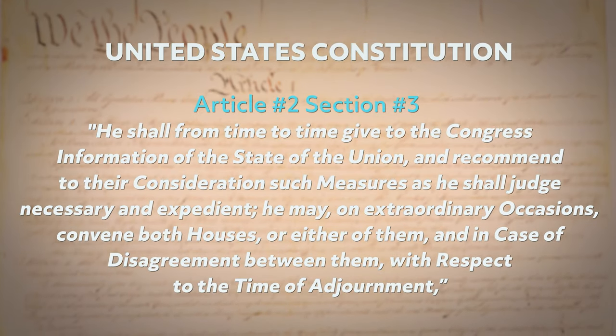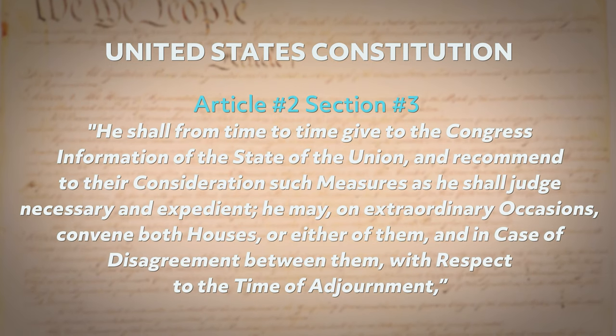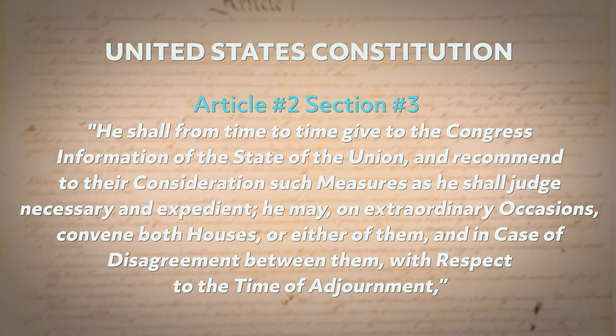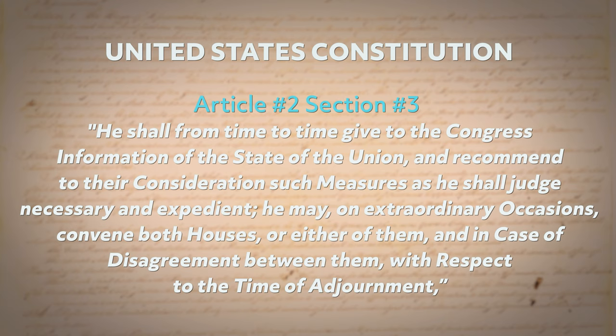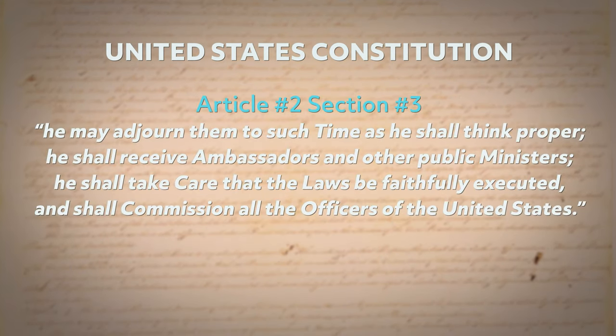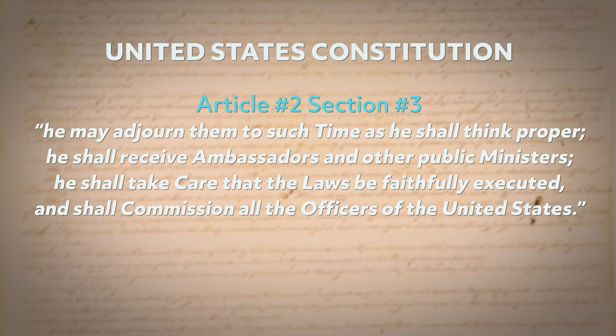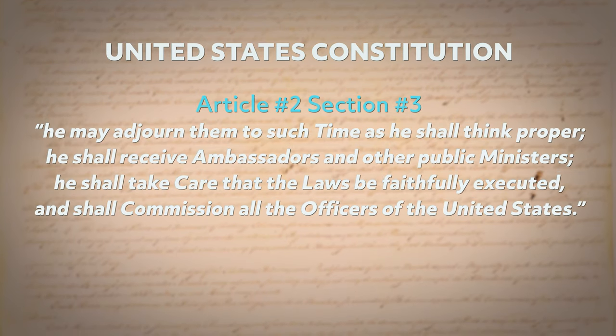The third section of Article 2 reads: 'He shall, from time to time, give to the Congress information of the State of the Union, and recommend to their consideration such measures as he shall judge necessary and expedient. He may, on extraordinary occasions, convene both houses or either of them. He shall receive ambassadors and other public ministers. He shall take care that the laws be faithfully executed and shall commission all the officers of the United States.'